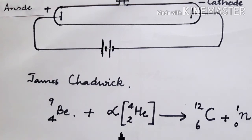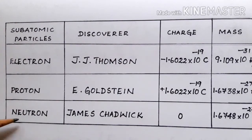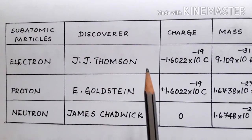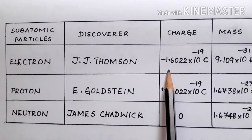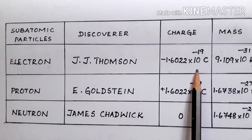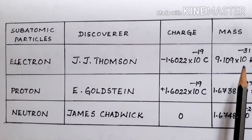When alpha particles bombard the beryllium nucleus, it results in carbon and a neutron. These discoveries helped identify the subatomic particles: electrons, protons, and neutrons. Electrons were discovered by J.J. Thomson. They carry a negative charge of −1.6022 × 10⁻¹⁹ coulombs, and their mass is 9.109 × 10⁻³¹ kilograms.